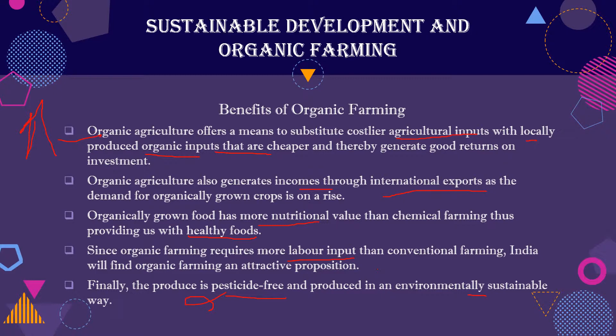You can generate income easily because demand is more worldwide, and demand is more because the nutrition value is higher. Pesticides and fertilizers are not used; instead, locally produced organic inputs are used, so you need more labor and it is more labor intensive.